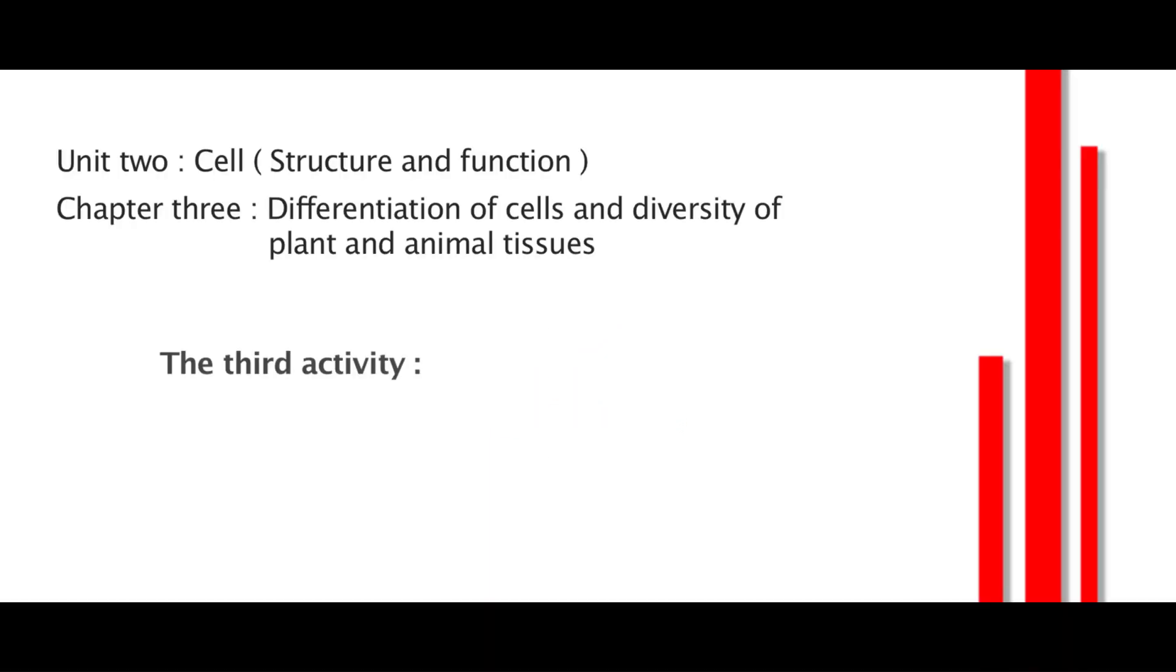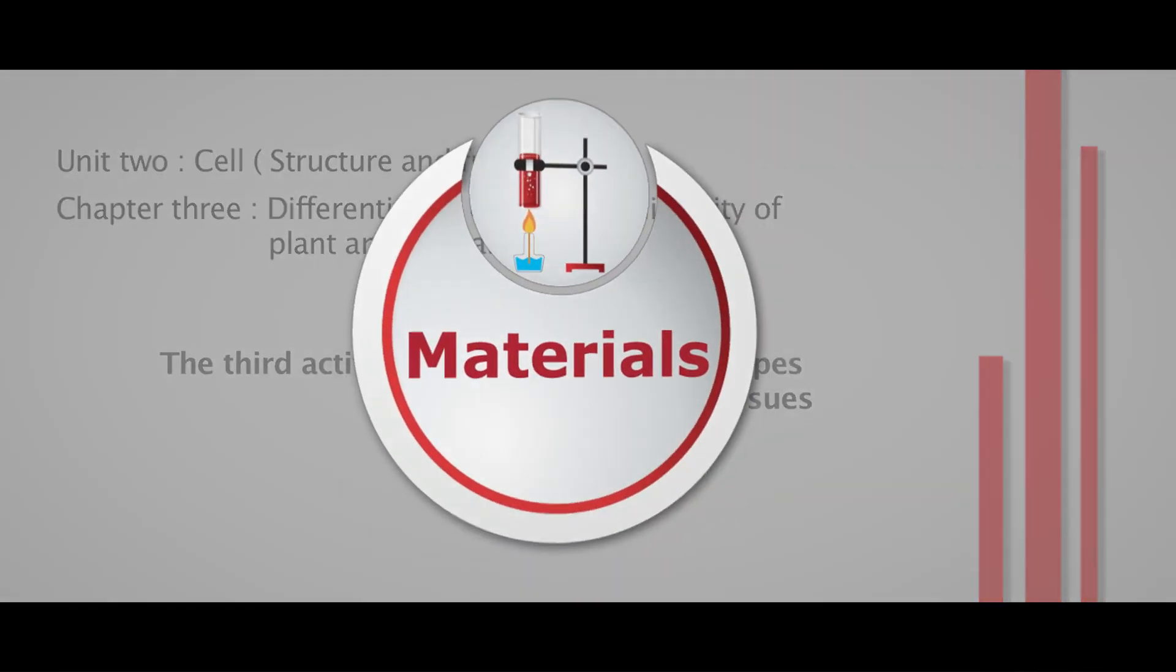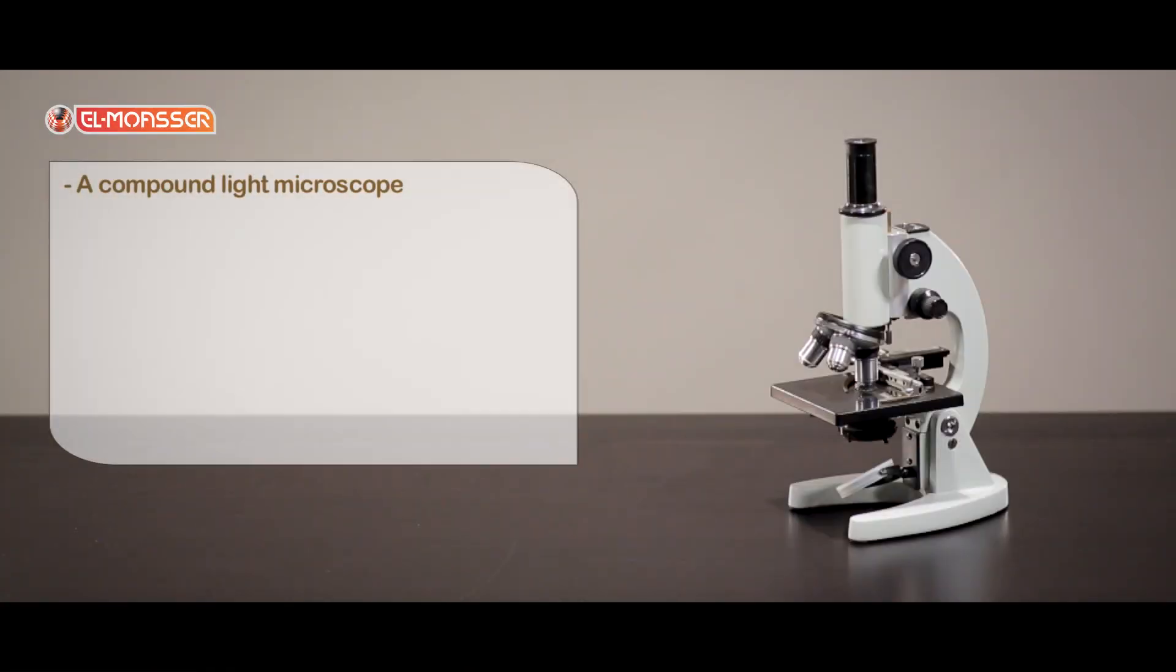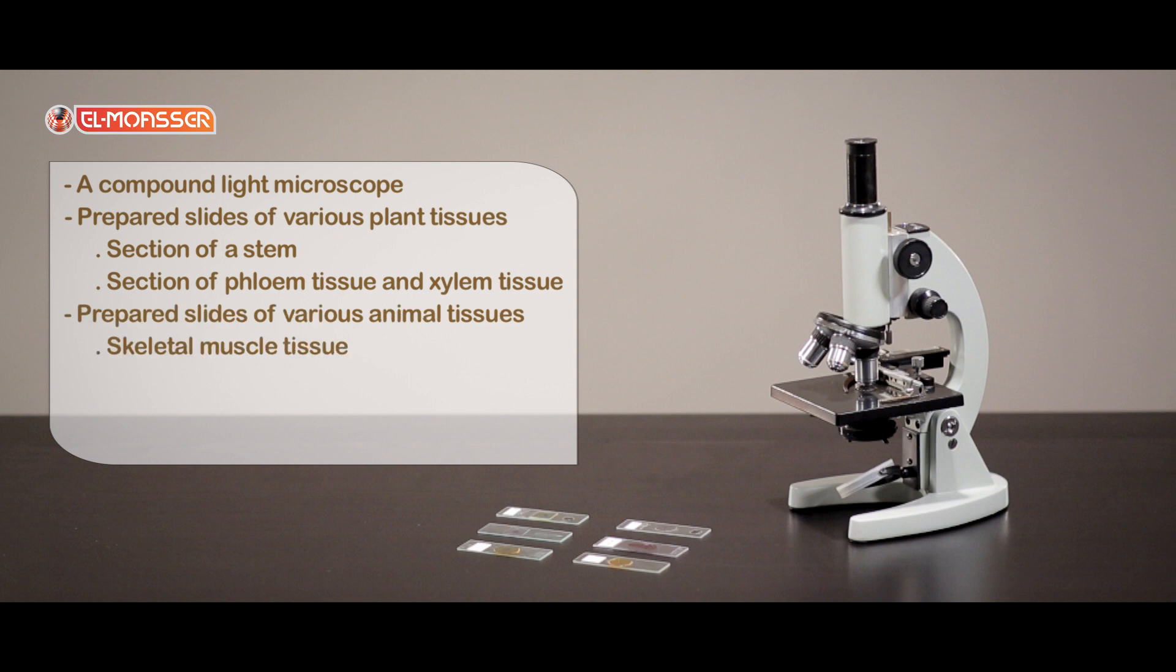The third activity: examining different types of plant and animal tissues. The materials: a compound light microscope, prepared slides of various plant tissues (section of a stem, section of phloem tissue and xylem tissue), prepared slides of various animal tissues (skeletal muscle tissue, cardiac muscle tissue, simple epithelial tissue, nervous tissue).